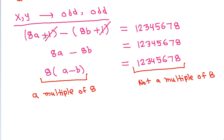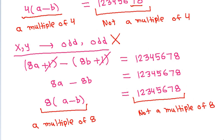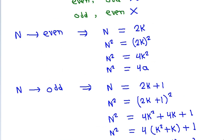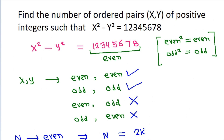That means both x and y cannot be odd. So the number of solutions is 0.